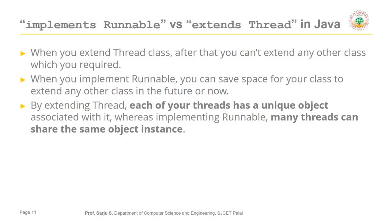Java does not support multiple inheritance. That is the first issue with extending the Thread class: when you extend Thread, you cannot extend any other class that you may require. However, if you implement the Runnable interface you can still extend another class because you are not extending Thread — you are implementing an interface. That is the first difference between implementing Runnable and extending Thread.